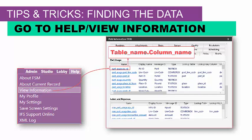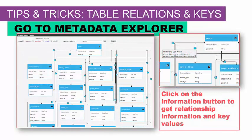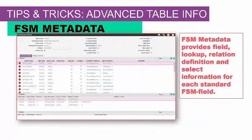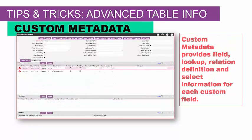If you go to view information, you can see help on the entire table and get the table name and column. Metadata Explorer, which is available for studio users, shows you the table structure along with key values so you can put keys in your queries. If you need more information, the FSM metadata provides field lookup relationship data and select information for each FSM field. If you're using custom metadata, you can go to the custom metadata table, which provides information related to field lookups, relationship definitions, and select information for each custom field.